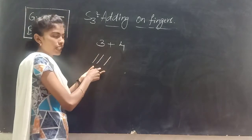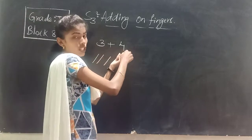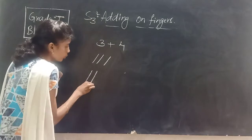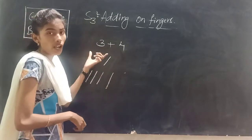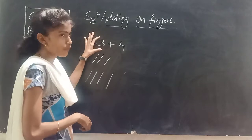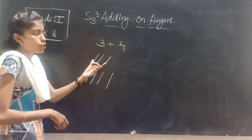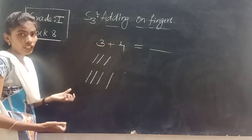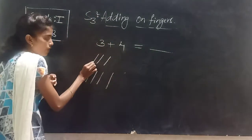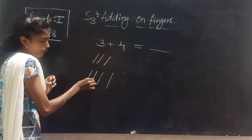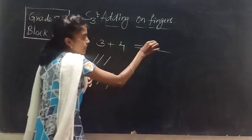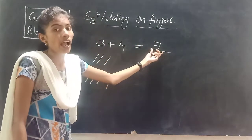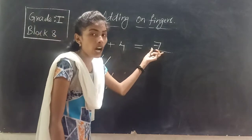I have taken three fingers first. Next, how many fingers do I have to take? Four more fingers — one, two, three, four. So three plus four is equal to — we combine three and four: one, two, three, four, five, six, seven. The answer which we get after adding is called sum or total.